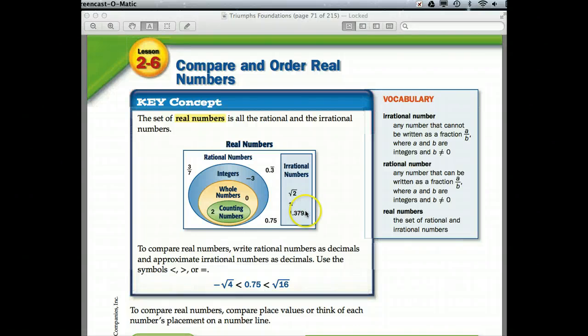So, to compare real numbers, you write rational numbers as decimals and approximate irrational numbers as decimals. So, you take them to the same amount of decimal places out so that you compare them. And then you're going to use the less than, greater than, or equal to signs to compare them. So, for instance, the opposite of the square root of 4 is less than 75 hundredths, which is less than the square root of 16. So, that's how we would order and compare them.